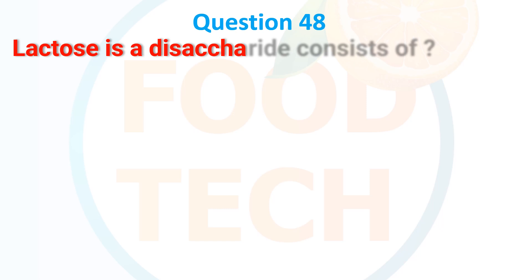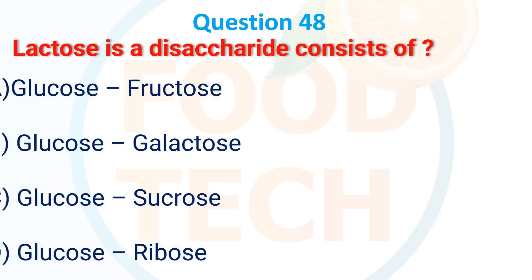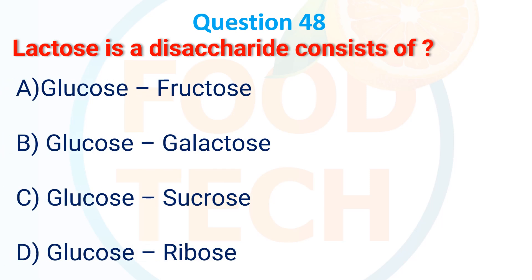Question 47: Lactose is a disaccharide consisting of — A. Glucose and fructose, B. Glucose and galactose, C. Glucose, D. Glucose and ribose. The answer is B. Glucose and galactose.